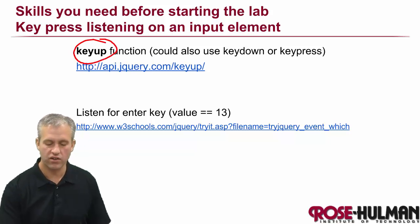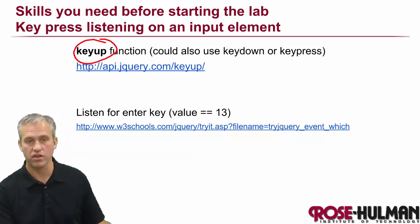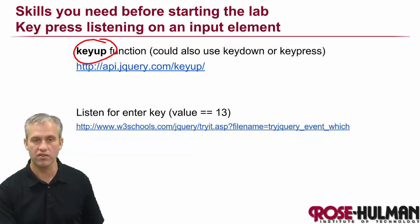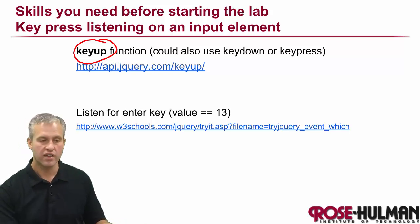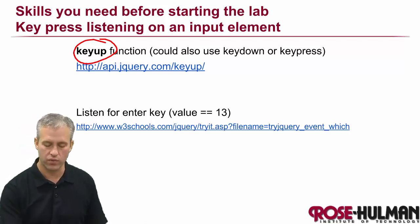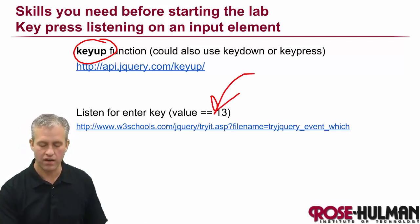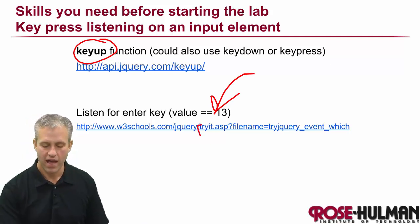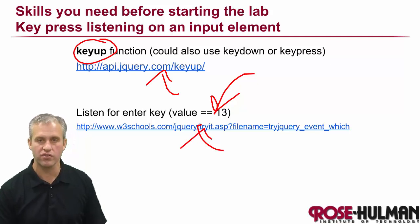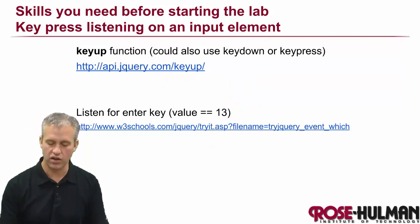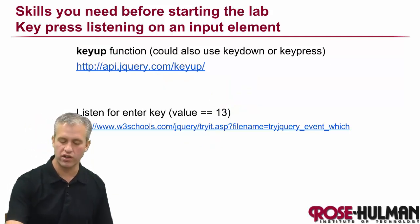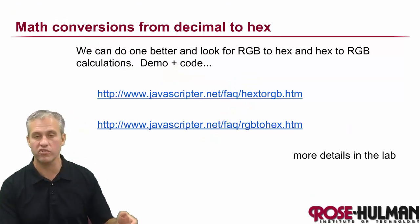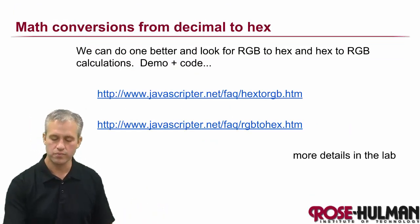For the enter key, I like to use keyup. You can also use keypress — that's fine. Key down would happen sooner if you want. The enter key is key code 13, so you're going to have to figure out how to detect which key was pressed and then respond just to the number 13. There are links provided that you can look up, or you can find those on your own.